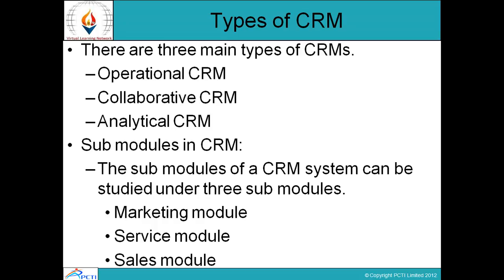Types of CRM: there are three main types. The first is operational CRM, which deals with front office activities, providing complete front office support to sales, marketing, and similar services. The second is collaborative CRM, which communicates directly with customers without involvement of sales or service representatives.